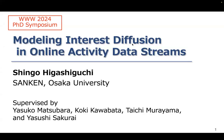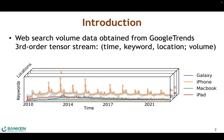This is the short promotional video for the PhD symposium at the Web Conference 2024. We consider modeling the web search volume data stream. It's a third-order tensor stream consisting of three attributes: time, keyword, and location.